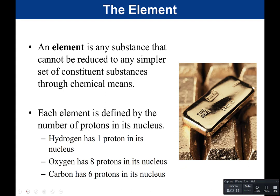An element is any substance that cannot be reduced to any simpler set of constituent substances through chemical means. Each element is defined by the number of protons in its nucleus. For example, hydrogen always has one proton in its nucleus, oxygen has eight, and carbon has six. You can't change the number of protons and have the same element — if you change the number of protons, you change the element.